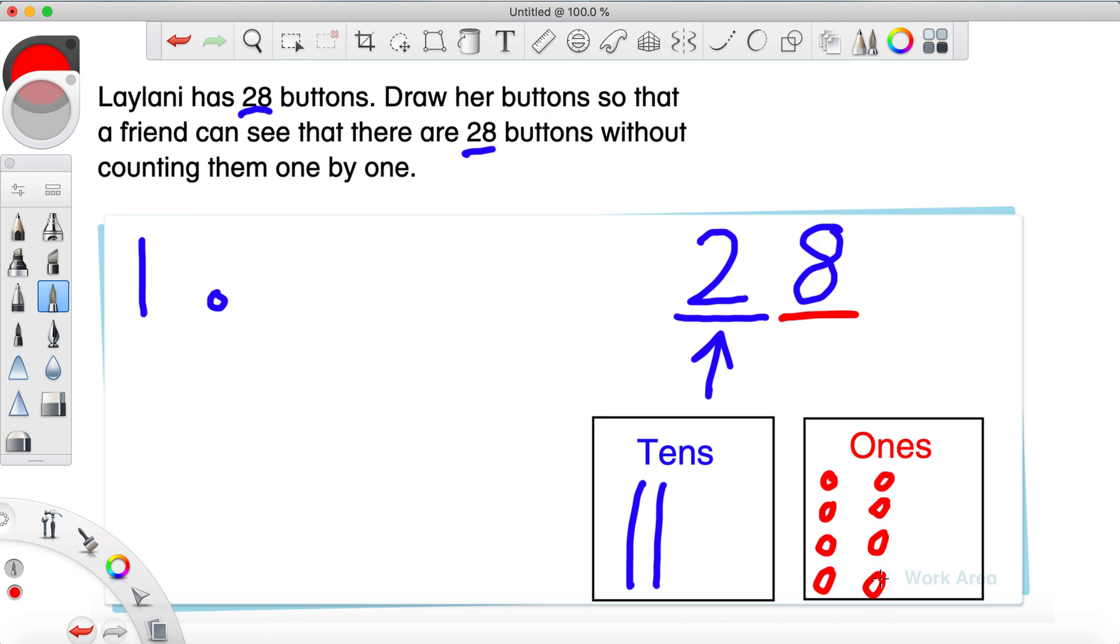So, now we can go ahead and we could actually count these just like we would by tens and ones. And, we can check our answer and make sure we did it right. So, we're gonna count these sticks by tens. 10, 20. And now we continue by ones. 21, 22, 23, 24, 25, 26, 27, 28. We have the same total that we saw up here.